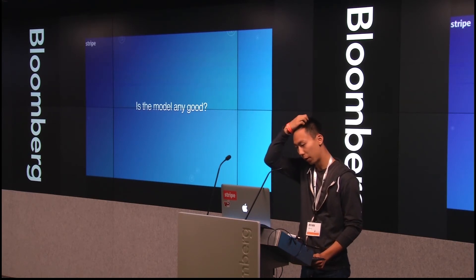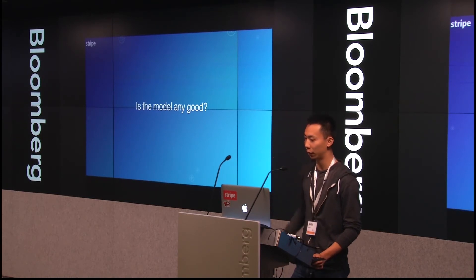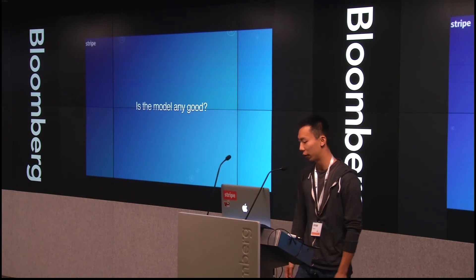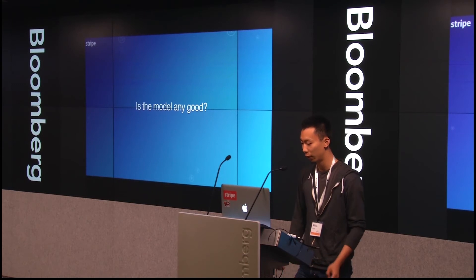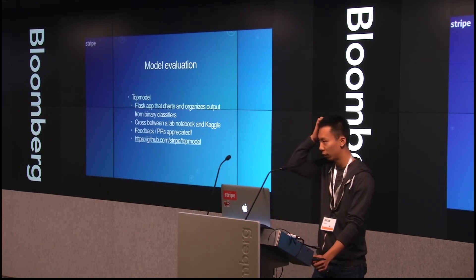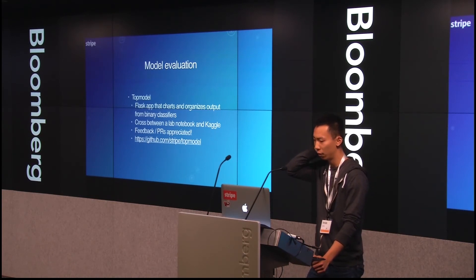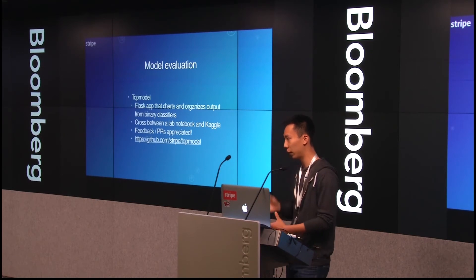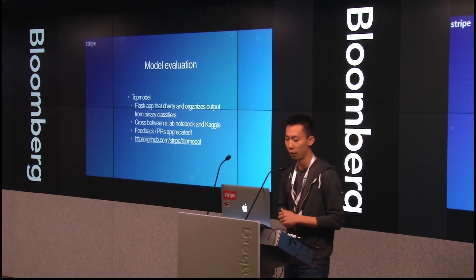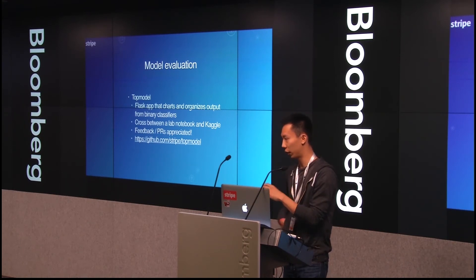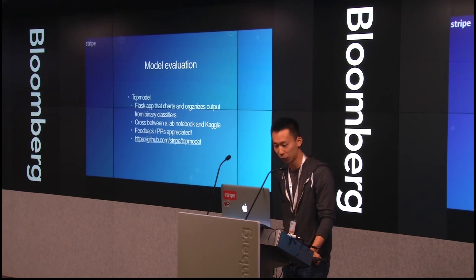After you train a model, you might ask: how do we know it's a model we should deploy? We have a service called Top Model, written by my colleague Julia Evans. It's a Flask app that charts the results — you train your classifier, upload the results to Top Model, backed by S3, and what you get out are performance metrics as well as charts of precision-recall, ROC, things like that. I think of it as a cross between a lab notebook and Kaggle.